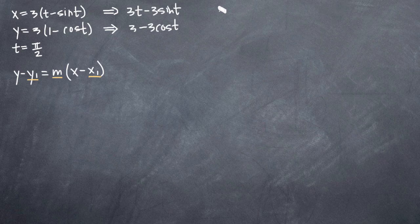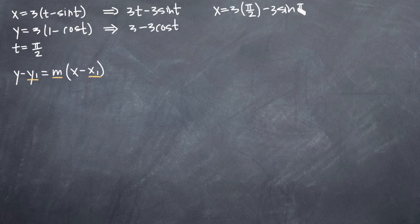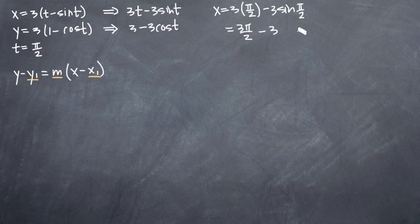If we plug in t equals pi over 2 to our x equation, we'll get 3 times pi over 2 minus 3 sine of pi over 2. That gives us 3 pi over 2 out in front, minus sine of pi over 2, which equals 1. So 3 times 1 is just 3, giving us minus 3.